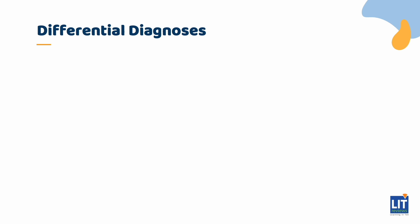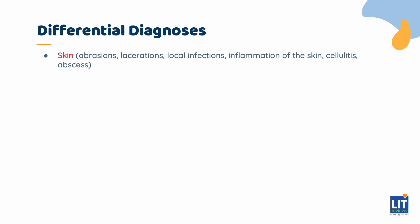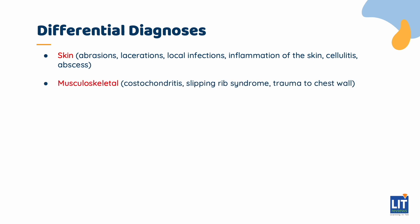The differentials for chest pain can be approached in a similar manner. For organic causes, we will consider differentials for skin. This includes traumatic injuries such as abrasions or lacerations, or local infections or inflammation of the skin that can result in cellulitis or an abscess. We will then look at musculoskeletal causes, which are common in children. This includes costochondritis, which is inflammation of the ribs, as well as slipping rib syndrome. Do not forget to consider trauma to the chest wall, which can result in fractures of the rib or sternum.